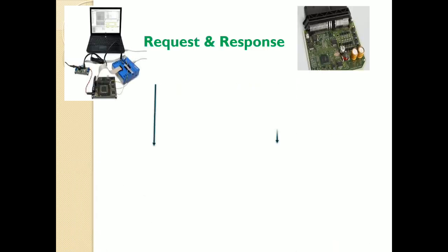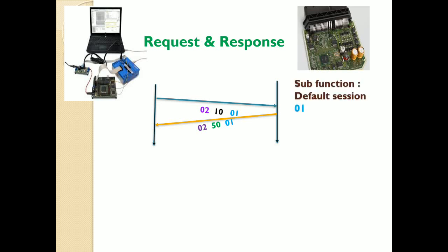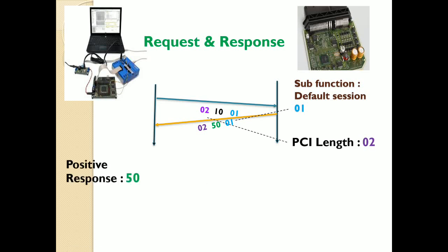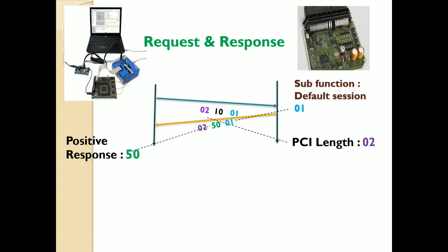Now let's go into how it will transmit the message. For a positive response, you are sending 0x10 as the request, and when getting the response you receive 0x50. The sub-function used here is the Default Session, sub-function 0x01. The 0x02 is the PCI length, and 0x50 is the positive response — this is the positive response you get for the request 0x10 with sub-function 0x01.